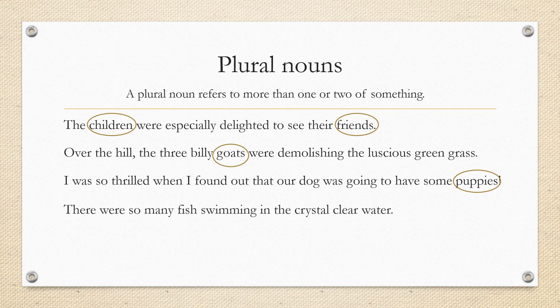There were so many fish swimming in the crystal clear water. Can you see the plural noun? It is fish. We don't say fishes, we just say fish, even if we are talking about one, two, or more.